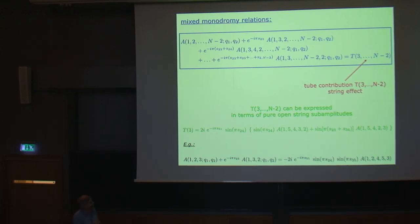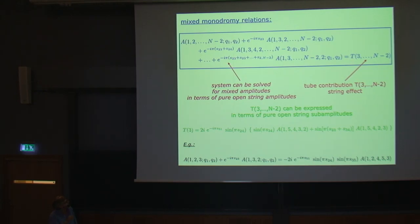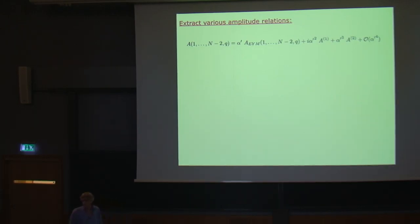By performing analytic continuation in other coordinates as well, we get many linear equations. Solving them, we find that the system allows us to completely express the mixed amplitudes in terms of pure open string amplitudes, since the right-hand side contains only pure open string amplitudes. Without the tube contribution from the closed string, this would just give the ordinary monodromy relations for pure open strings; with the single closed string, you have this additional tube contribution.